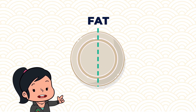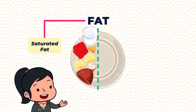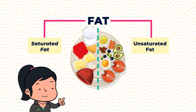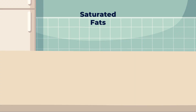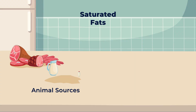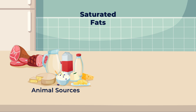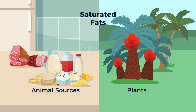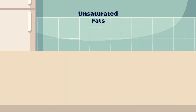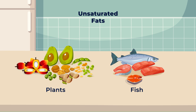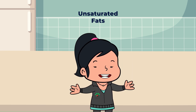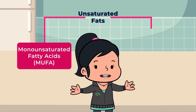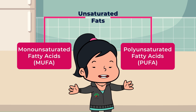There are two main types of fat: saturated and unsaturated fat. Saturated fats are mainly from animal sources including meat and dairy products, but some plants also contain saturated fats such as oil palm and coconut. Unsaturated fats can be found mostly in oils from plants and fish, and can be further grouped into monounsaturated or polyunsaturated fats.